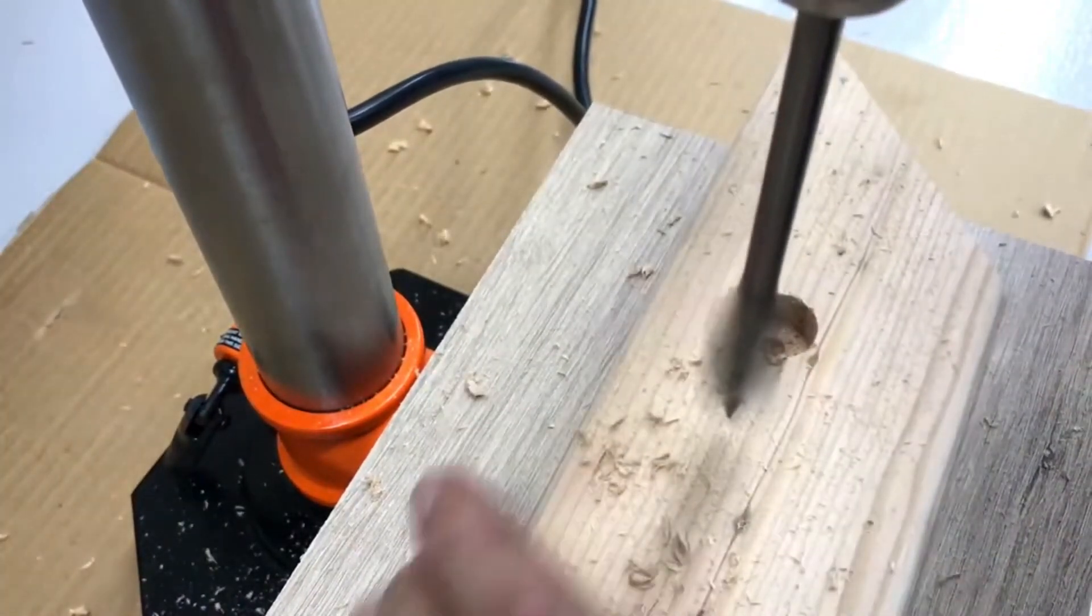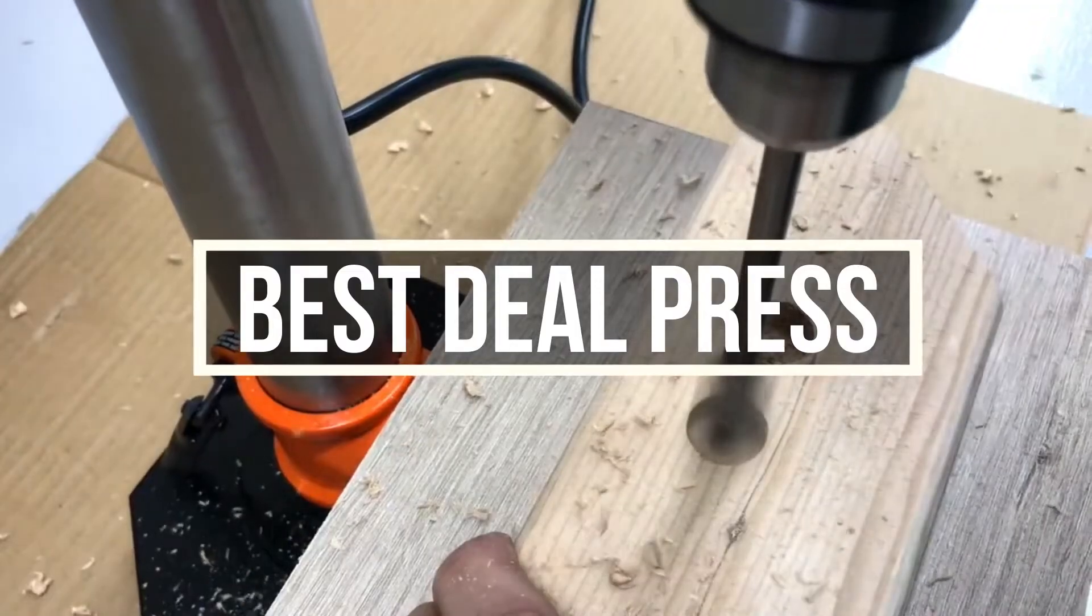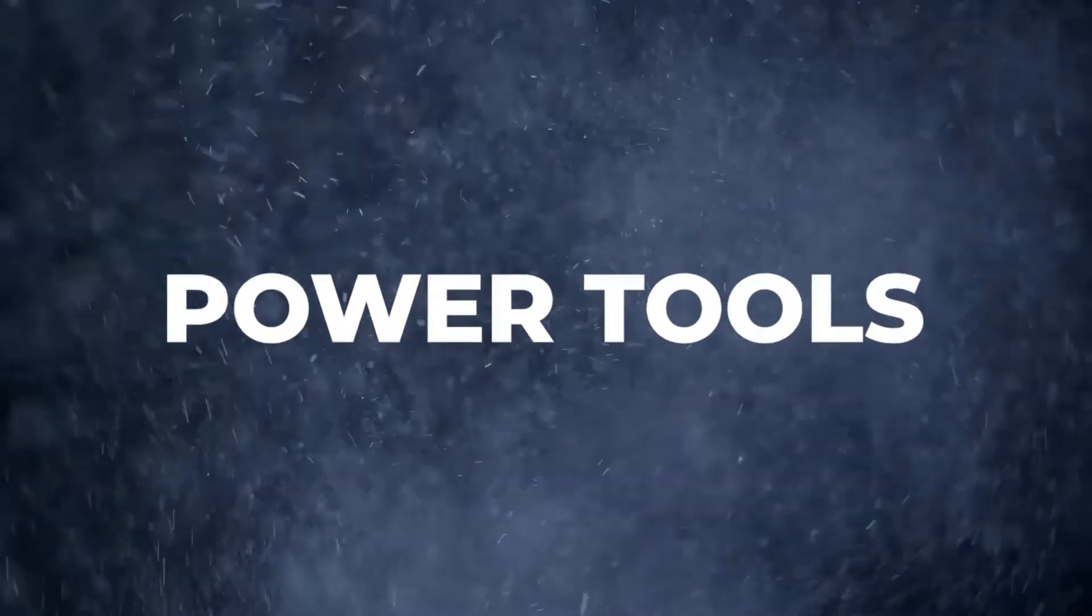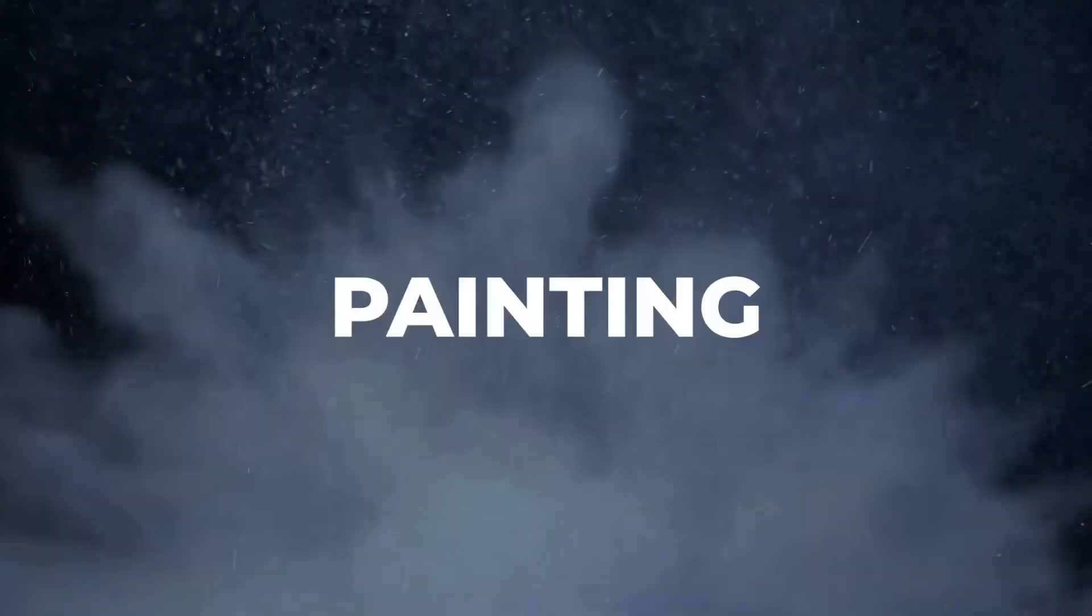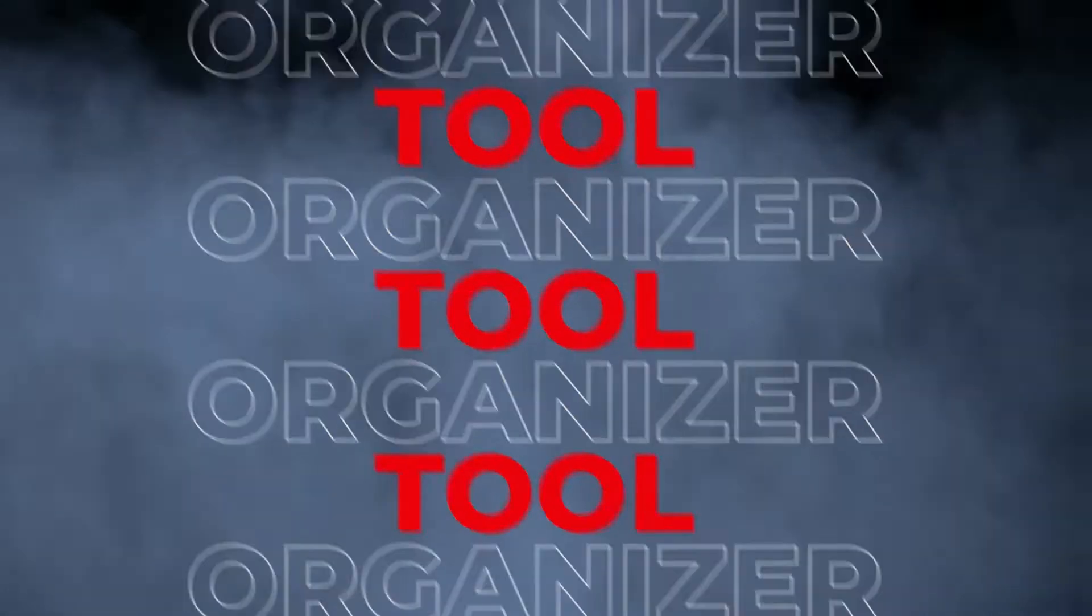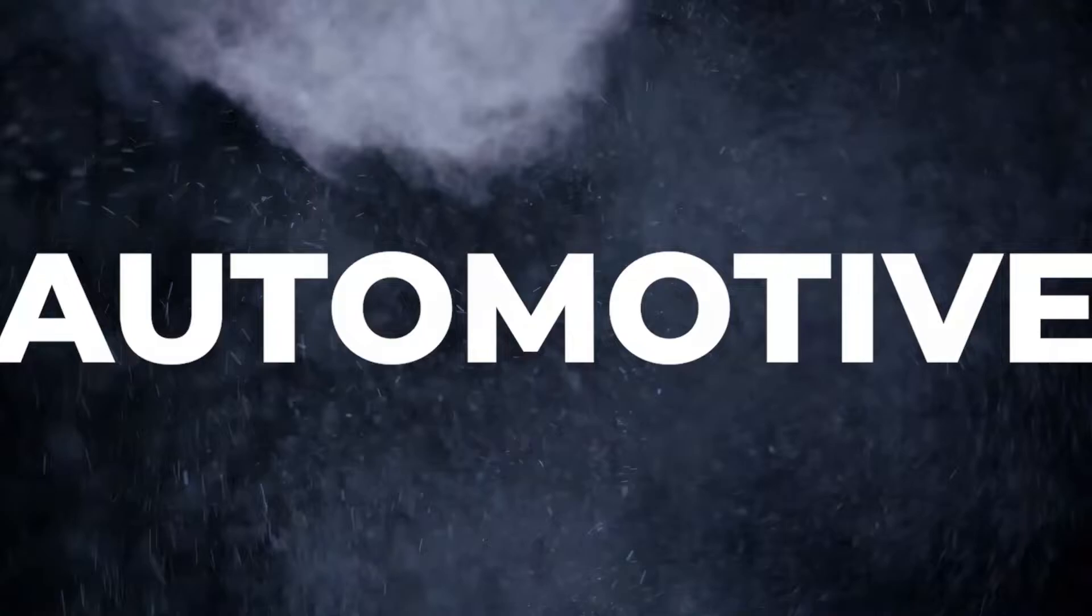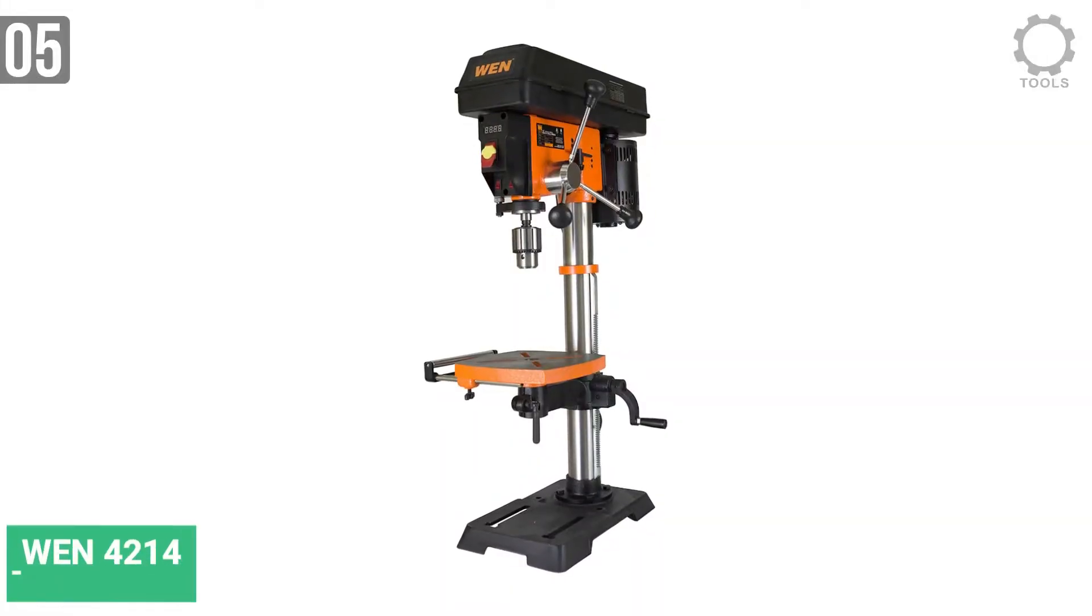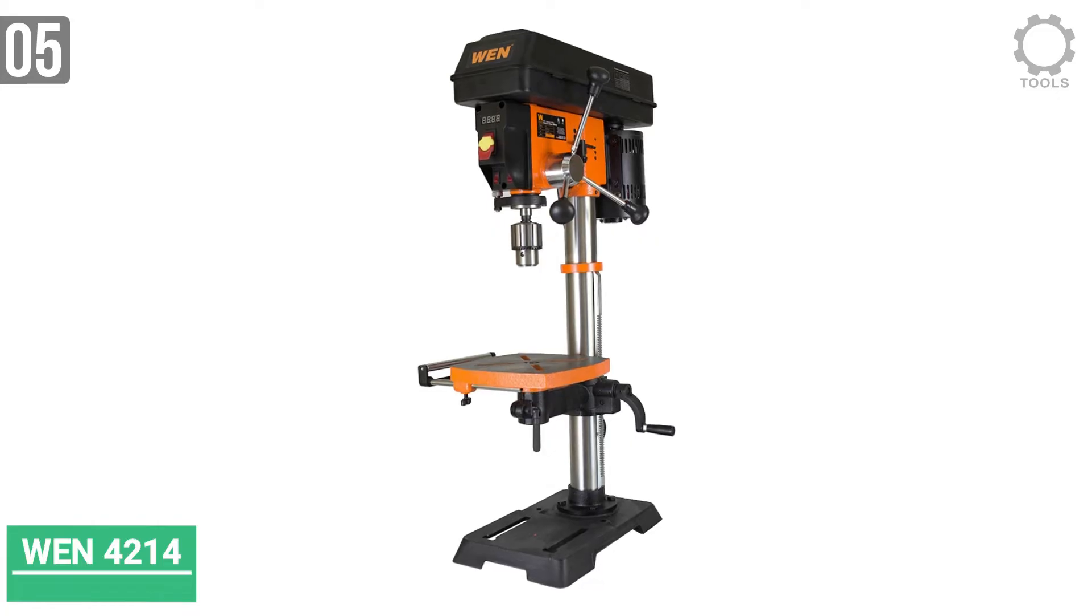We are going to find out some of the best drill presses today. Let's start. Number five: WEN 4214 Variable Speed Drill Press.